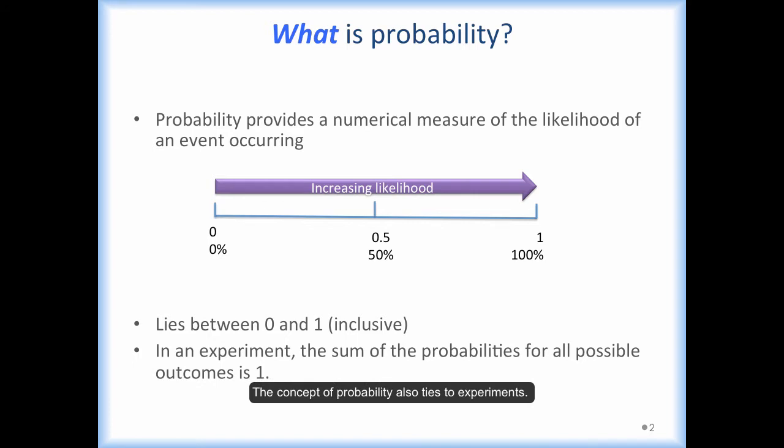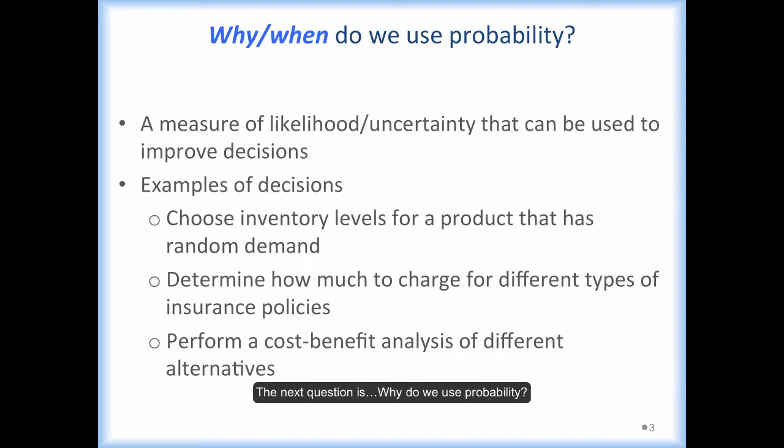The concept of probability also ties to experiment. An experiment is a process that results in one of a number of possible outcomes. The sum of the probabilities for all possible outcomes is 1. For example, when we toss a fair coin, there are two possible outcomes in this experiment. There is a 50% chance to get a head and a 50% chance to get a tail. The sum of the probabilities for these two possible outcomes is 1, or 100%.